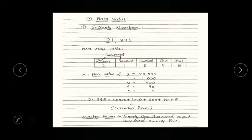The next objective is place value. We all have already learned place value for 5 digit numbers. Then also, let's revise that. We have taken 5 digit number as 21,895.